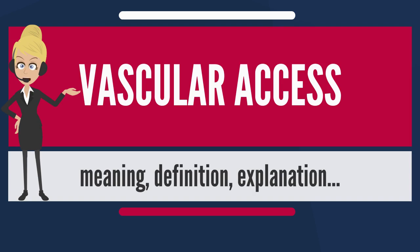There are three primary methods used to gain access to the blood: an intravenous catheter, an arteriovenous fistula, or a synthetic graft. In the latter two, needles are used to puncture the graft or fistula each time dialysis is performed. The type of vascular access created for patients on hemodialysis is influenced by factors such as the expected time course of a patient's renal failure and the condition of his or her vasculature. Patients may have multiple accesses, usually because an arteriovenous fistula or graft is maturing and a catheter is still being used.